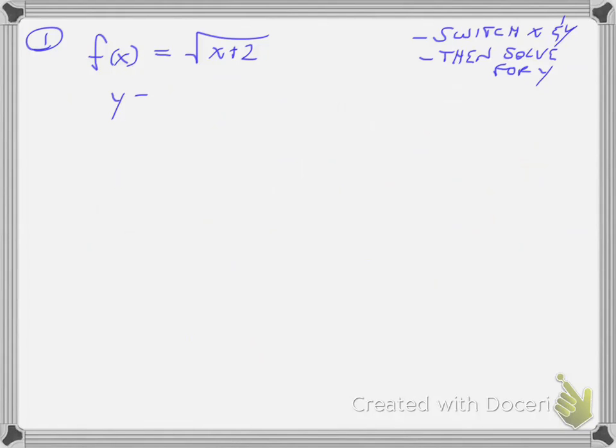So this is really y equals square root of x plus two. So I switch the x and y, and I get x equals the square root of y plus two, and then solve.